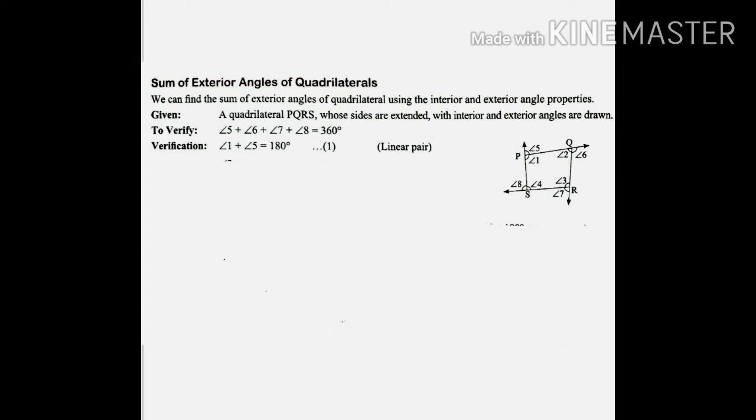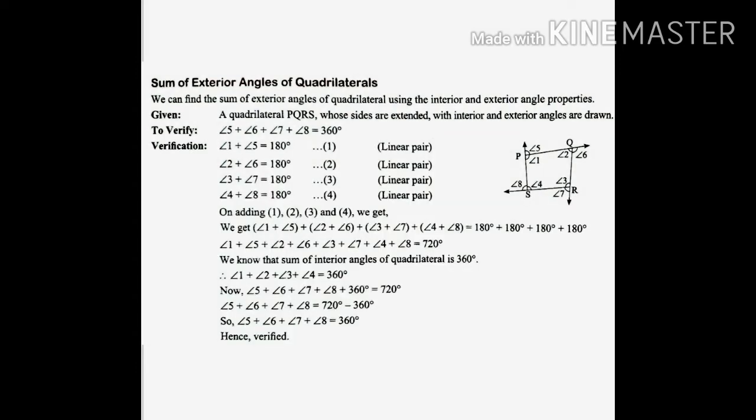The sum of exterior angles of the quadrilateral: the sum of exterior angles of any polygon is 360 degrees. For a quadrilateral, there are four exterior angles, and their sum is 360 degrees. Angles 1 and 5, 2 and 6, 4 and 8, 3 and 7 are linear pairs. Adding all these gives 4 × 180° = 720°. Subtracting the sum of interior angles (360°) from 720° gives 360°.